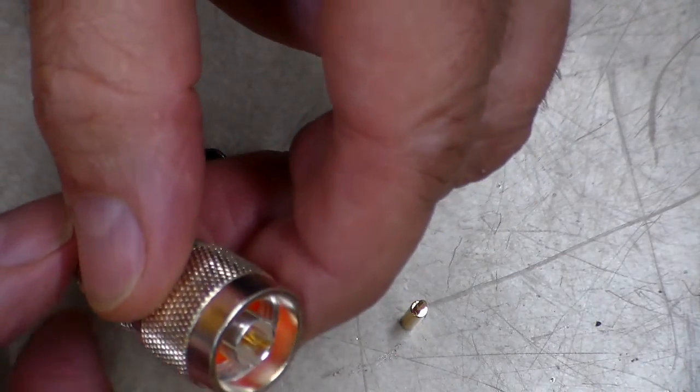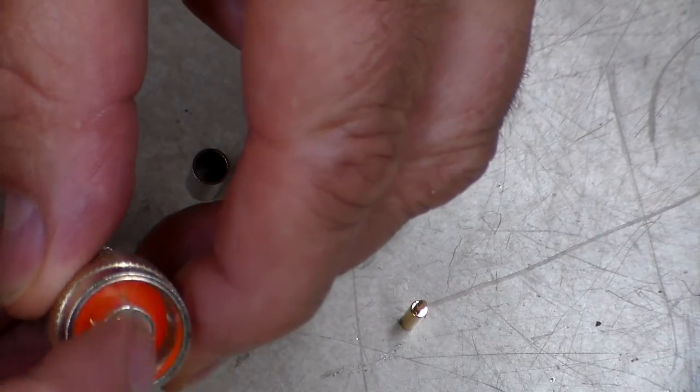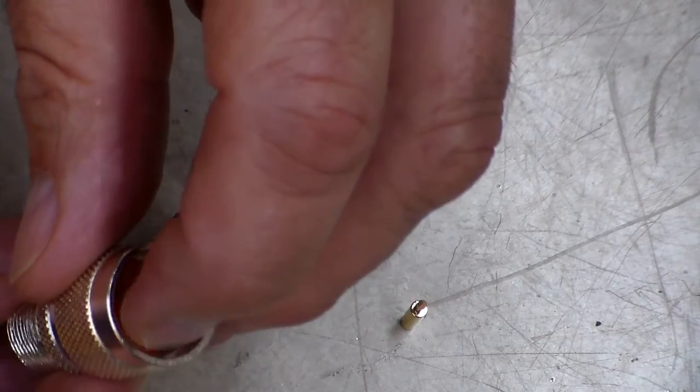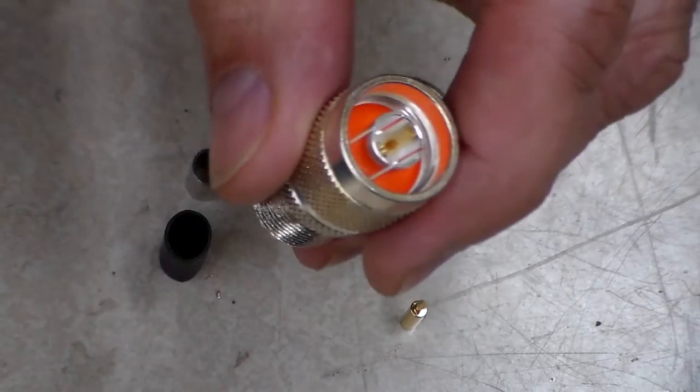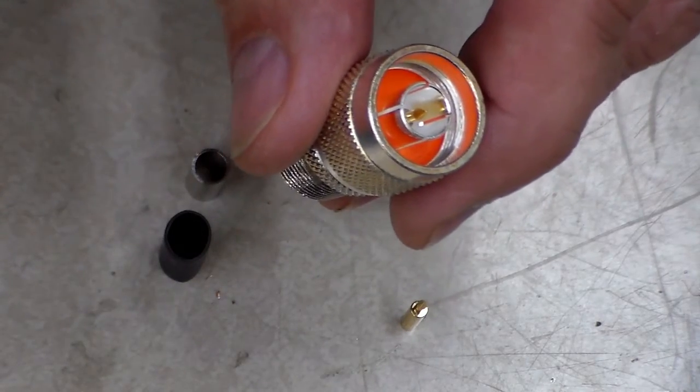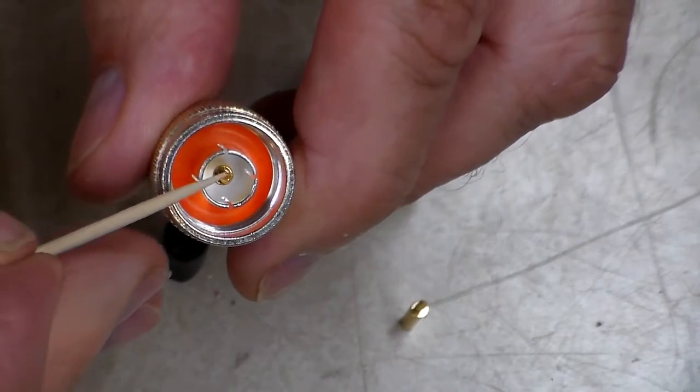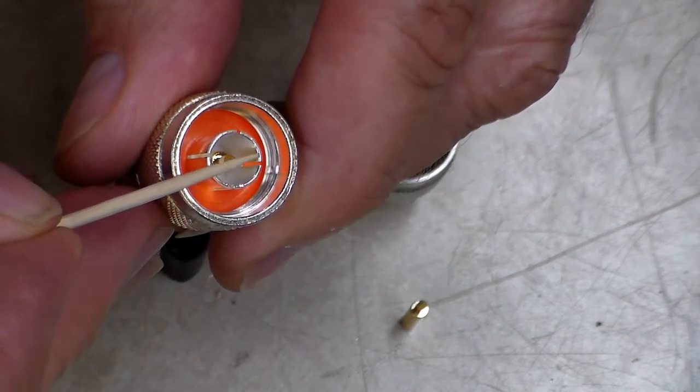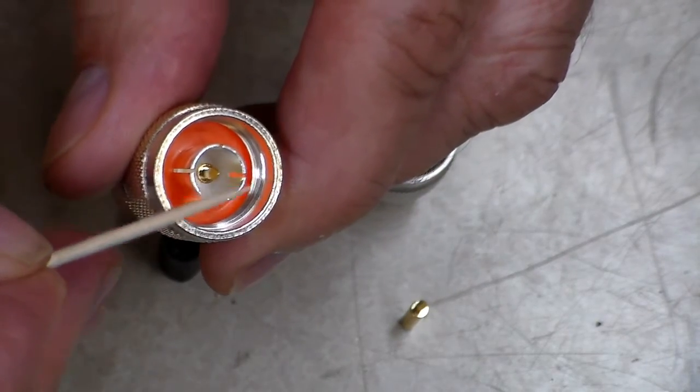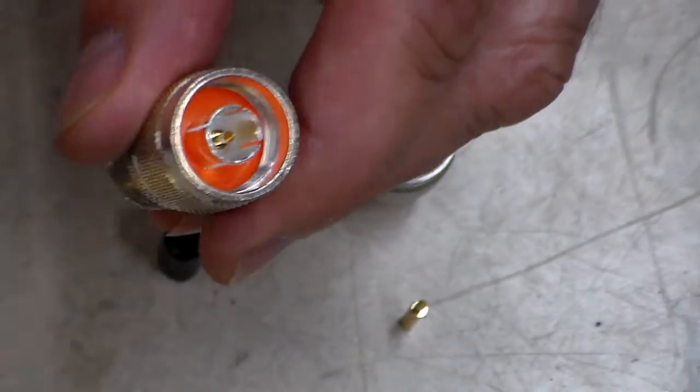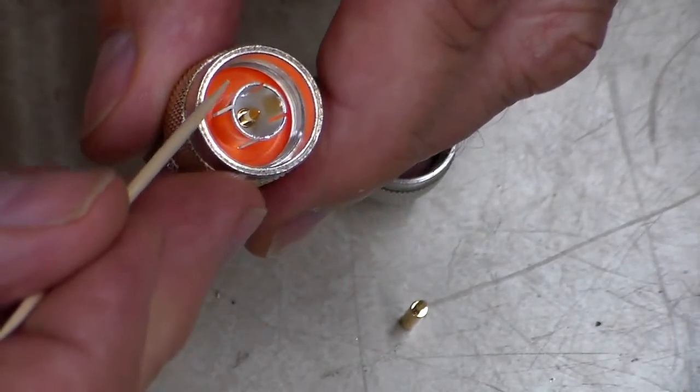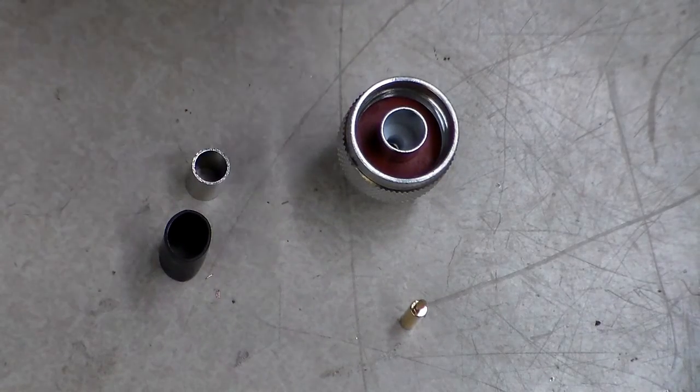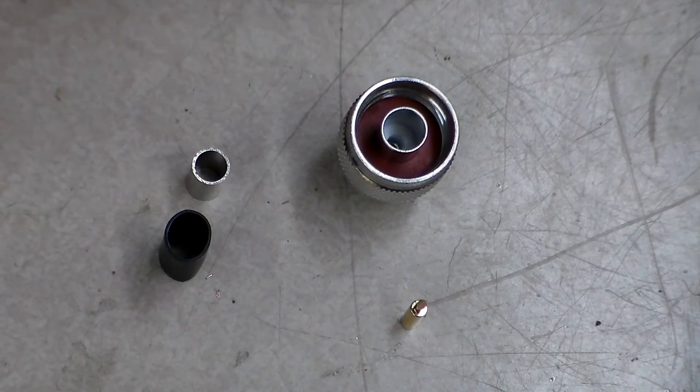But it did come with adapters, and this is an N-type to SO239. One of the things I want to point out is that center pin comes almost to the very top of that shield that's all around it. That gave me my first clue of how long I had to make this cable.